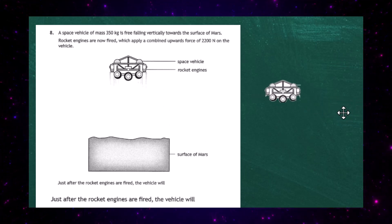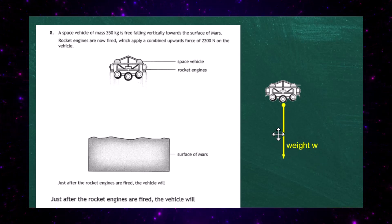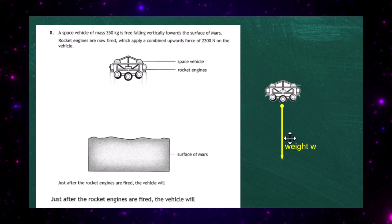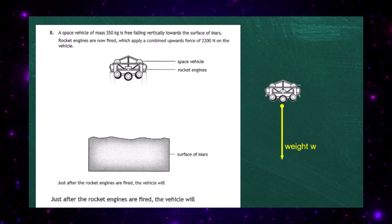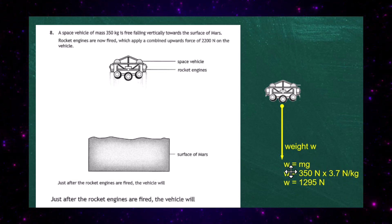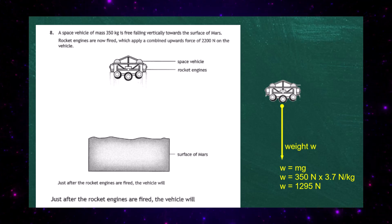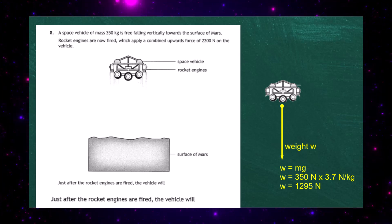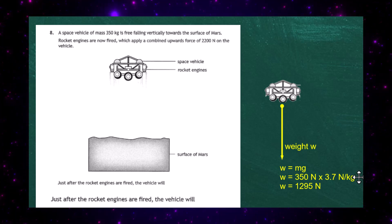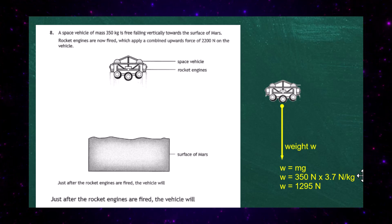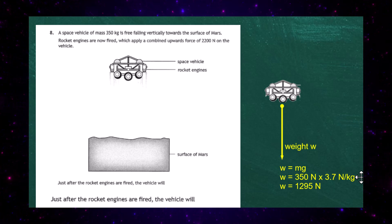We have to look at the forces on the spacecraft. The downward force is the weight, which is causing it to free-fall towards the planet. We calculate weight = mg, but we must use g for Mars, which is 3.7 N/kg. So weight = 350 × 3.7 = 1295 Newtons acting downward.